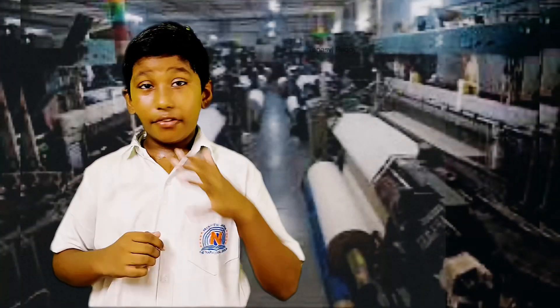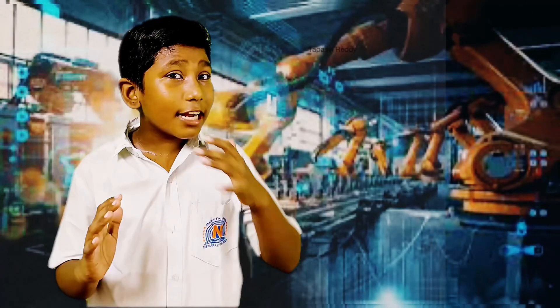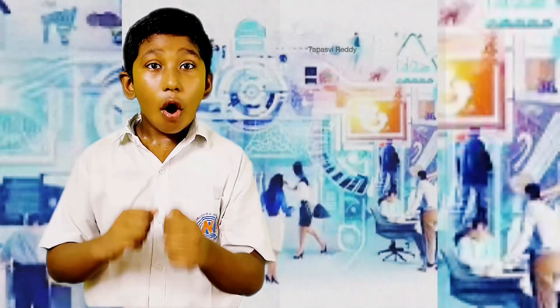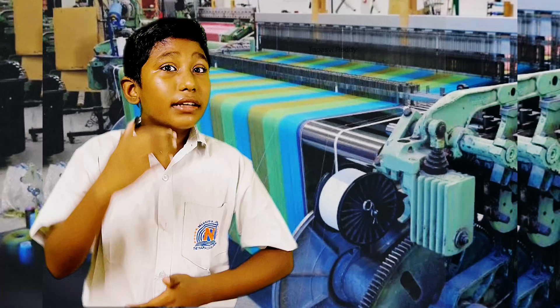Small-scale industries can be defined as units of an investment on plant and machinery or equipment of Rs. 1 crore. Handicrafts, handlooms, khadi, coir, agriculture and power looms are some examples of small-scale industries.